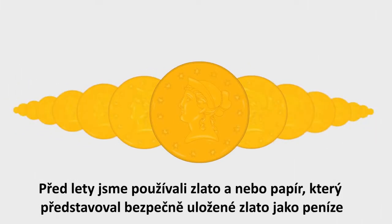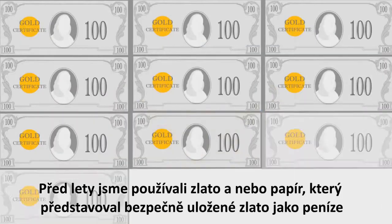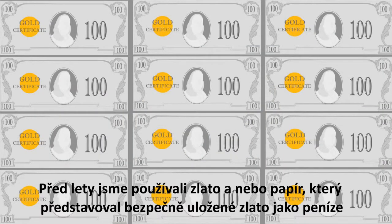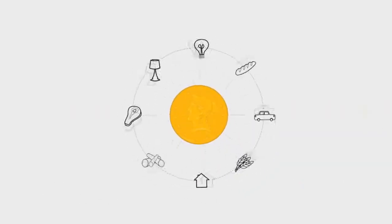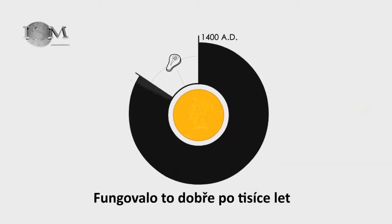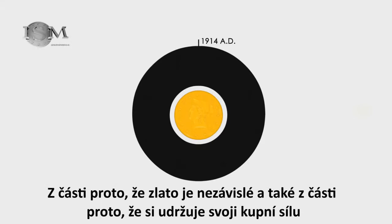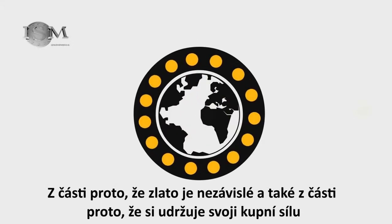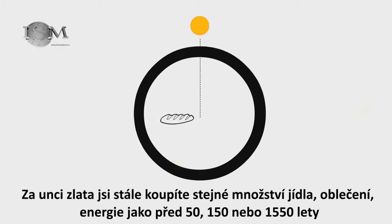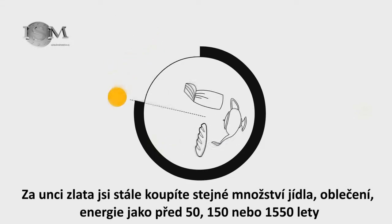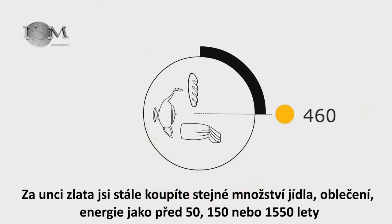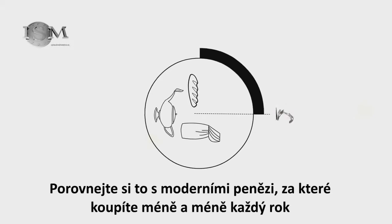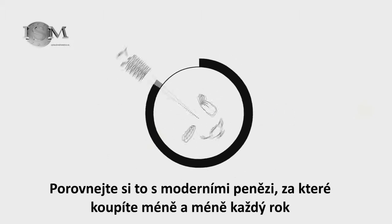Once upon a time, we used gold, or paper that represented safely stored gold, as money. It worked well for thousands of years, partly because gold is independent and partly because it keeps its purchasing power. An ounce of gold buys you as much food, clothing, and energy as it did fifty, or a hundred and fifty, or one thousand five hundred and fifty years ago. Compare that to modern money, which seems to buy you less and less each year.